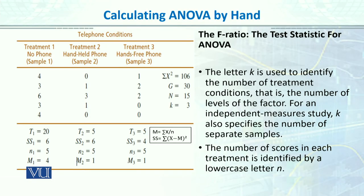This is an example from the book of Gravetter. It's an easy one, small data, small sample. We have the telephone condition as an independent variable where we have three levels: number one is no phone, number two is hands-held phone, and number three is hands-free phone. In our three groups, we have five people who have been randomly assigned.